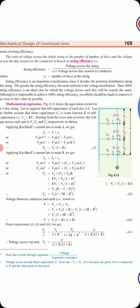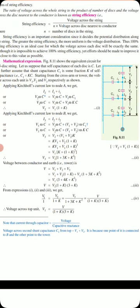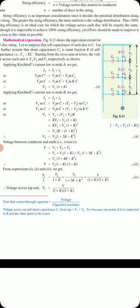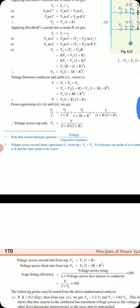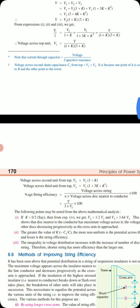Applying KCL at node B: I3 = I2 + i2. This gives V3·ωC = V2·ωC + (V1 + V2)·ωC1. Substituting C1 = kC and solving, we get: V3 = V1(1 + 3k + k²). The total voltage V = V1 + V2 + V3. Substituting the expressions for V2 and V3 in terms of V1 gives: V = V1(3 + 4k + k²), which can be written as V = V1(1 + k)(3 + k).